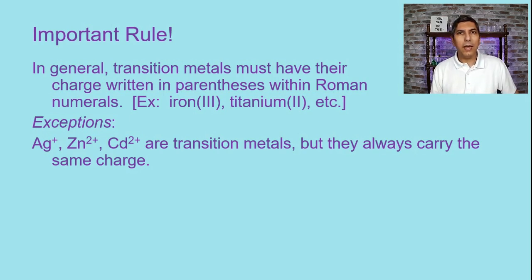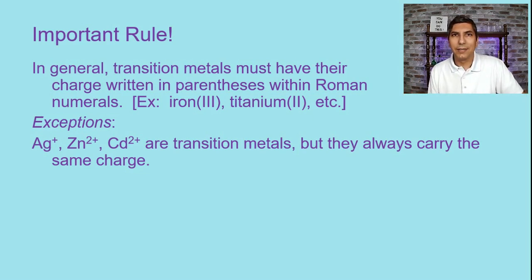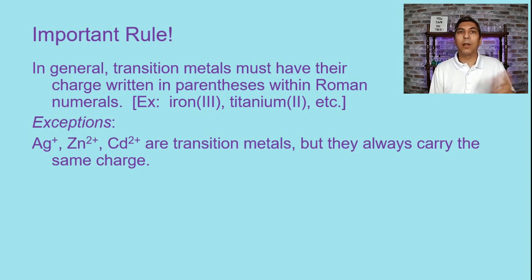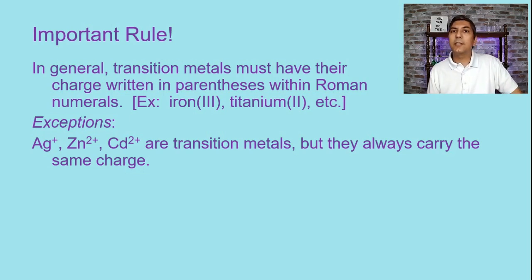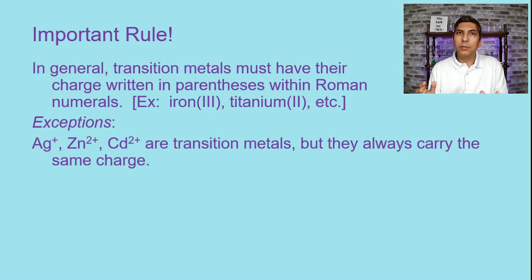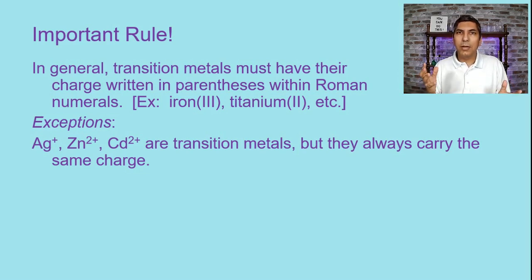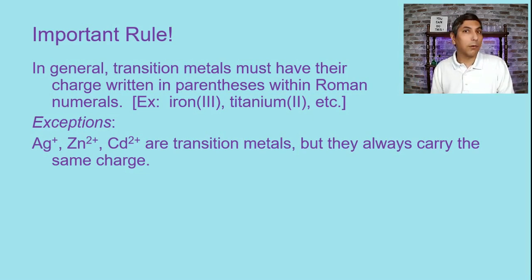Silver, zinc, and cadmium are transition metals, but they always have the same charge. Silver is always plus 1 — so it would be redundant to say silver(I); just say silver. Zinc is always plus 2, so it's not necessary to say zinc(II). Cadmium is always plus 2 as well. Other transition metals need the charge in Roman numerals because those metals can have multiple possible charges — iron is sometimes plus 2, sometimes plus 3, so we have to differentiate.